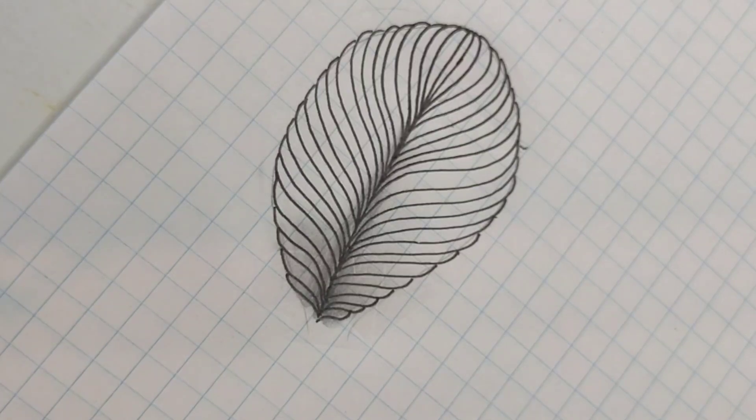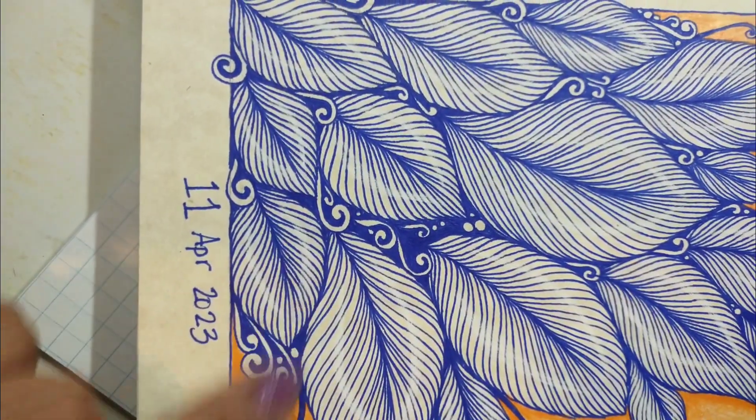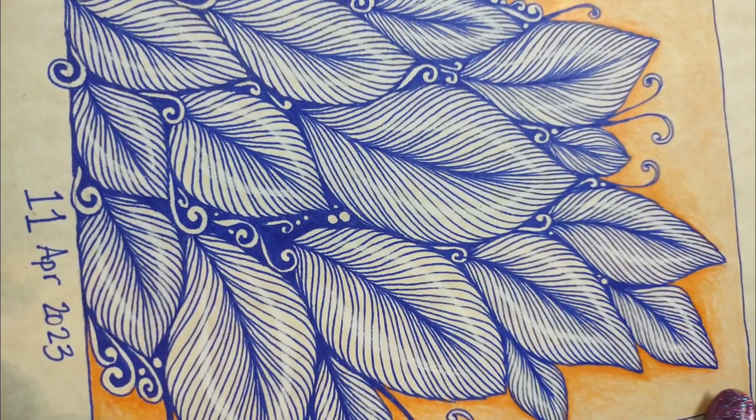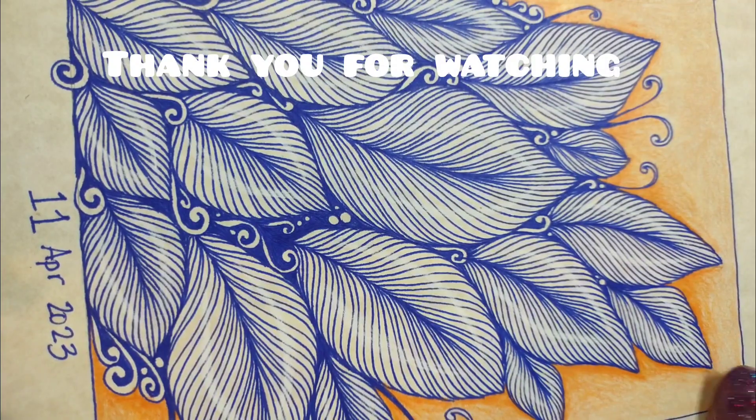And I'll show you again what it looks like inside of my journal. And this is the result you'll get. I used a blue pen here and then added some colors around it using colored pencils. So I hope you give this a try.